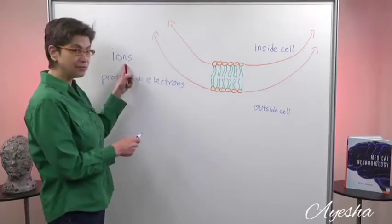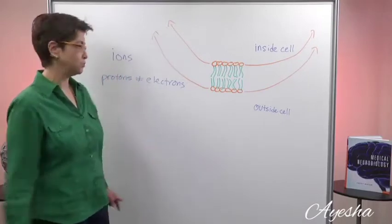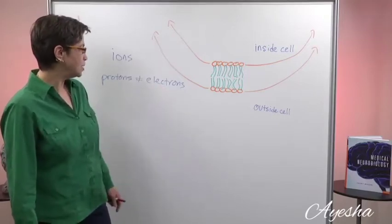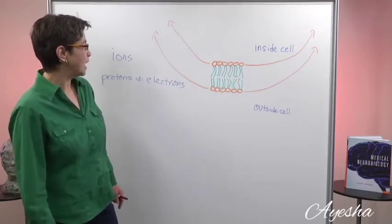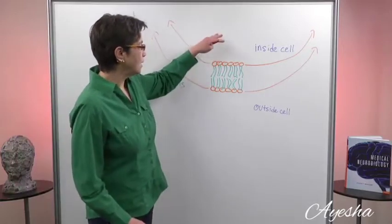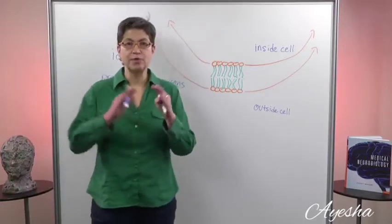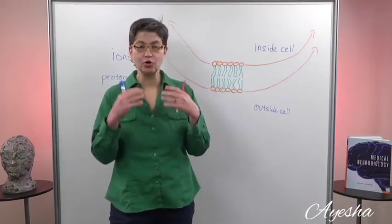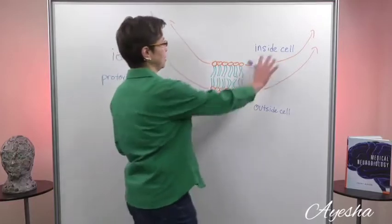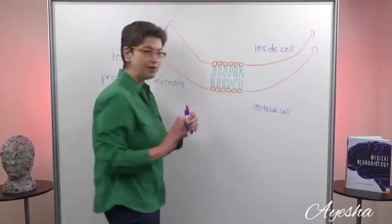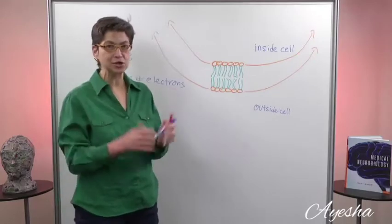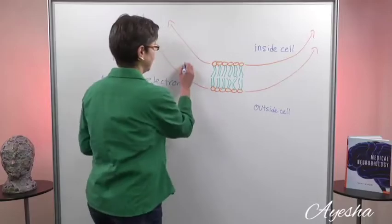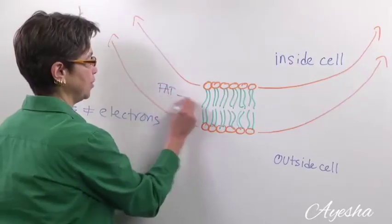So ions are either positively charged or negatively charged just because they've either gained or lost electrons. So these ions are present within the context of cells. And cells all have what are called cellular membranes. So a membrane is a very amazing structure that's made up mostly of fat. It's important to understand that most of a membrane is fat.